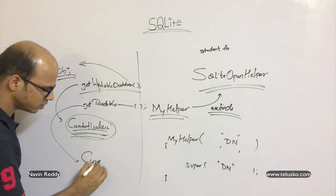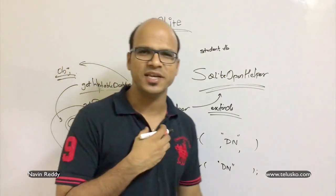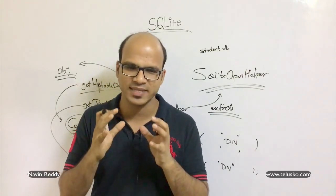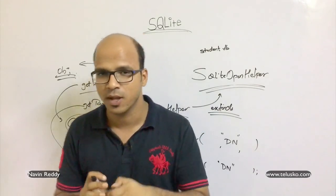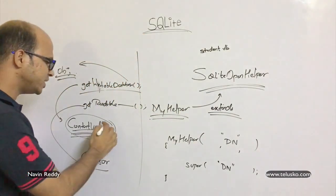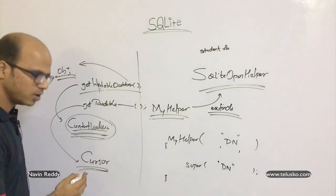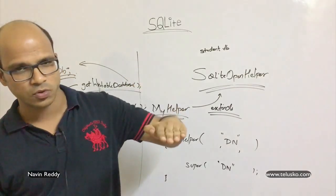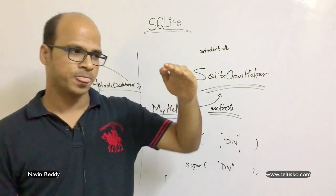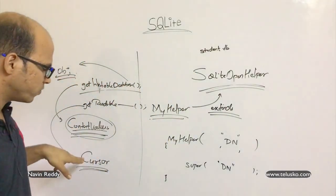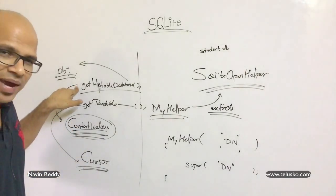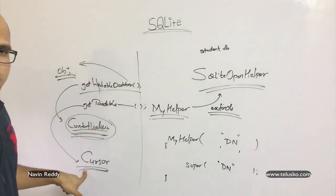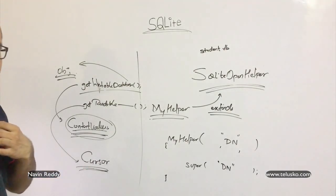When you want to fetch data you need to use something called Cursor. If you're familiar with JDBC, we use ResultSet there — whenever you fire a query to the database you fetch data and store it in ResultSet. In Android, we use Cursor instead. All the data you are fetching will be stored inside a Cursor. If you're fetching five rows, you can navigate between rows — go to the next row, specify positions, and fetch a particular column — all with the help of Cursor.